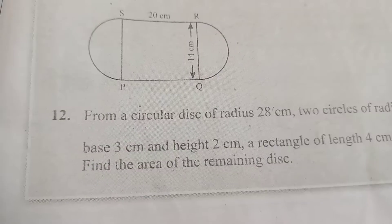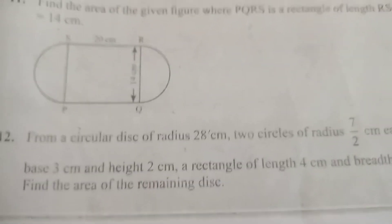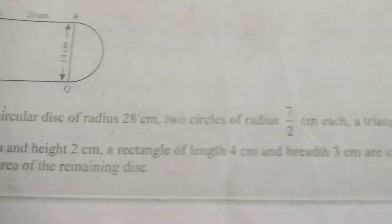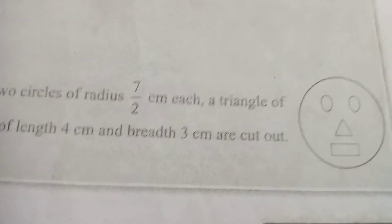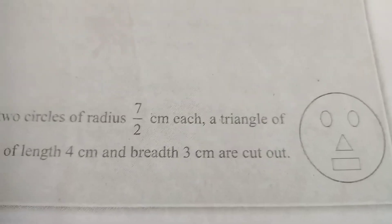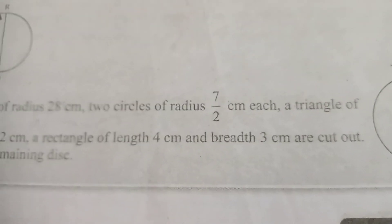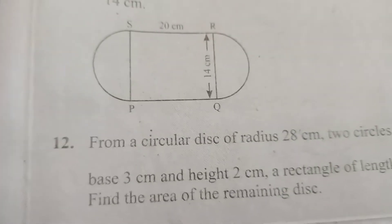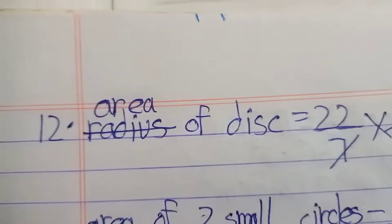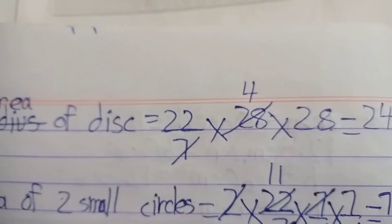Question twelve: from a circular disc of radius 28 cm, two circles of radius 7 over 2 cm, a triangle of base 3 cm and height 2 cm, and a rectangle of length 4 cm and breadth 3 cm are cut out. We need to find the remaining disc area. First find the area of the entire disc of radius 28 cm.